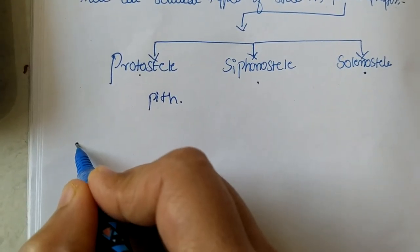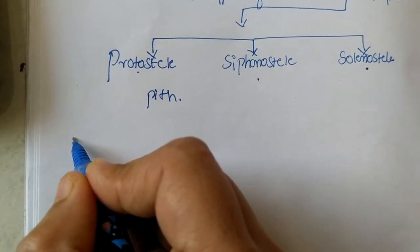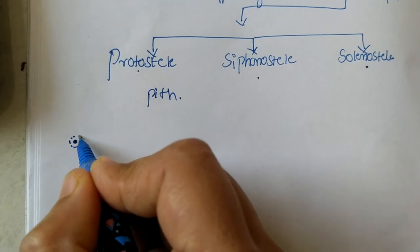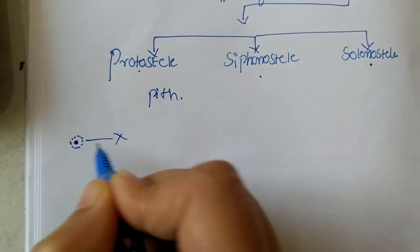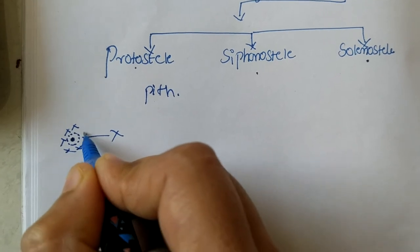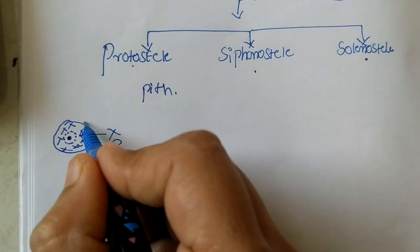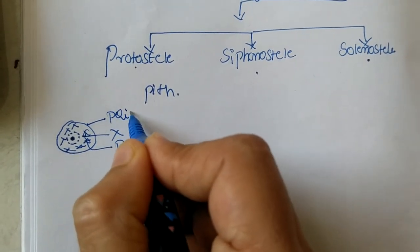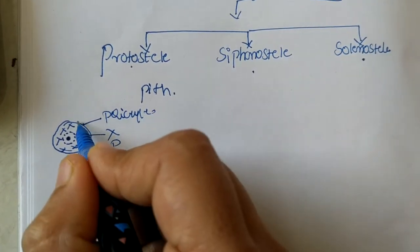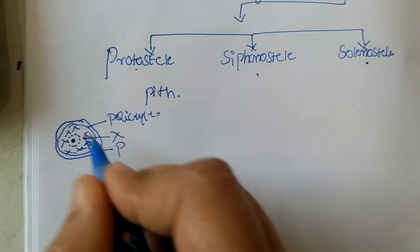Where pith is present, the center core in the steel, the most central part is pith. Pith is surrounded by xylem. This xylem is surrounded by phloem. Phloem will be having outermost covering which is pericycle. Now pericycle will be surrounded outwardly by endodermis.